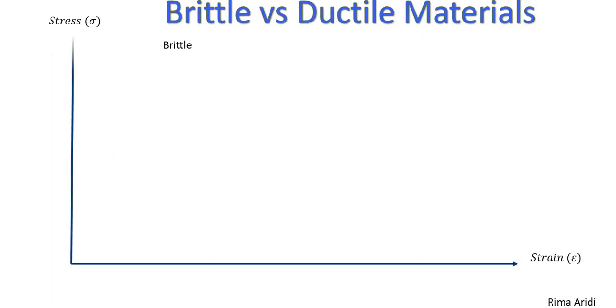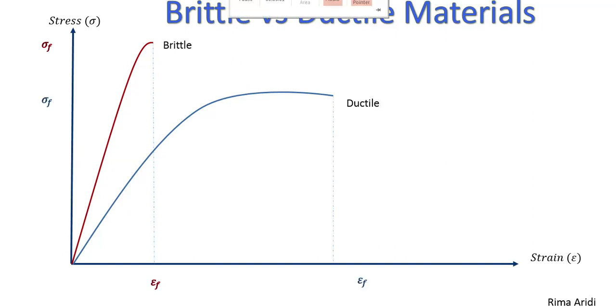Okay, now let's compare both curves together. Brittle material absorbs little energy, whereas ductile material absorbs higher energy. However, the fracture point or the fracture stress in the brittle material is higher than the fracture point in the ductile material.